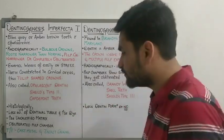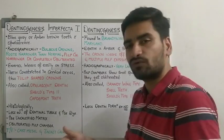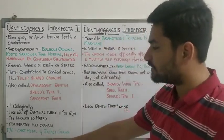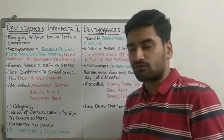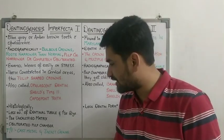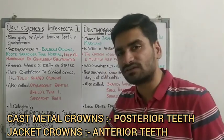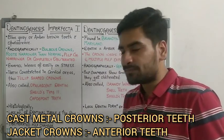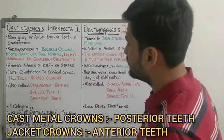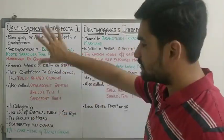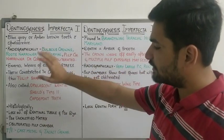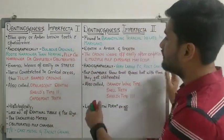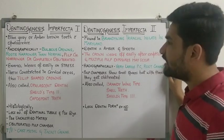The obliterated pulp chamber is seen due to continuous deposition of dentin. Even though dentin is wearing off continuously, it is also getting deposited. Treatment is cast metal crowns or jacket crowns. Cast metal crowns are preferred in the posterior areas and jacket crowns in the anterior area. These are the clinical, histological, radiological features and treatment of DI type 1.